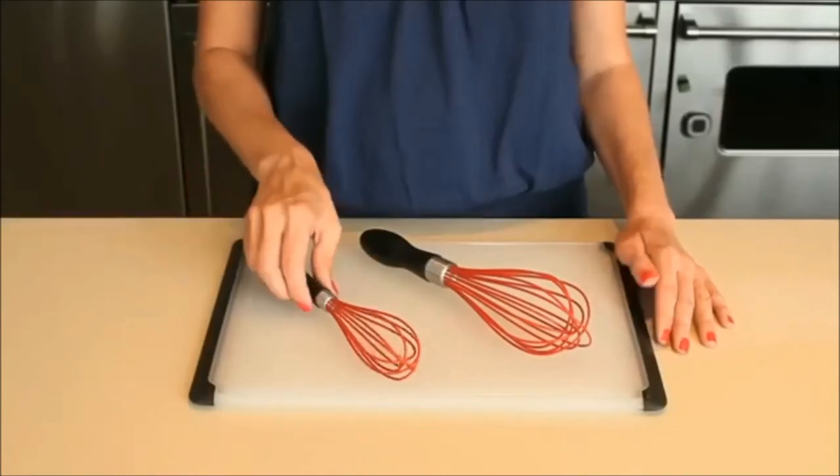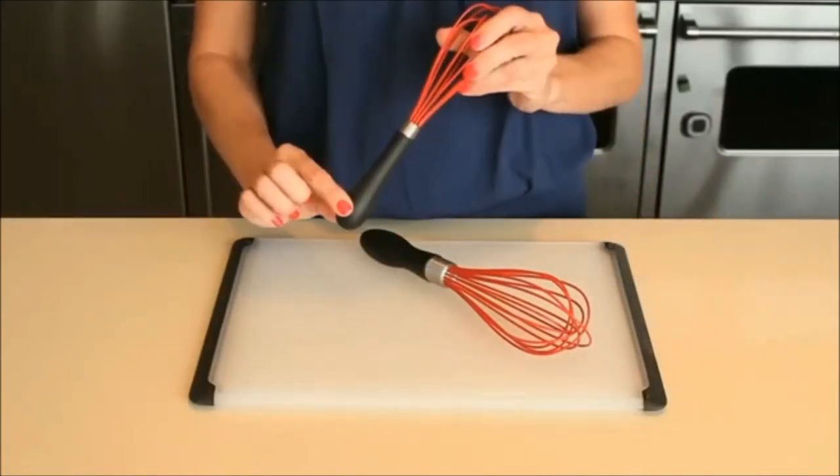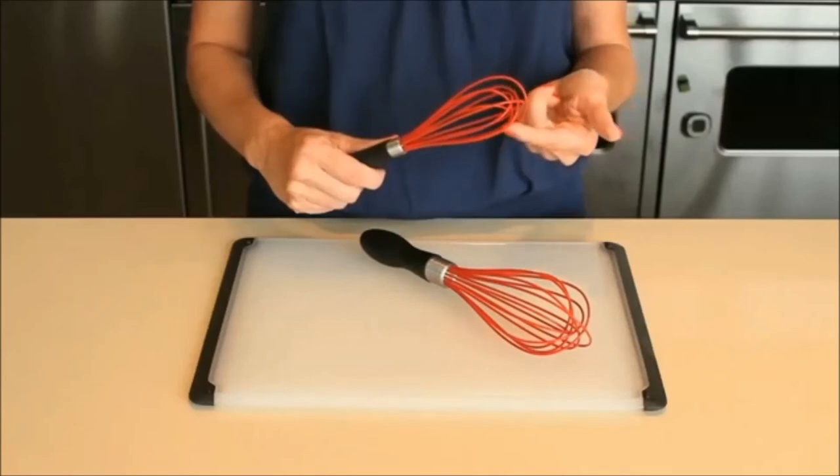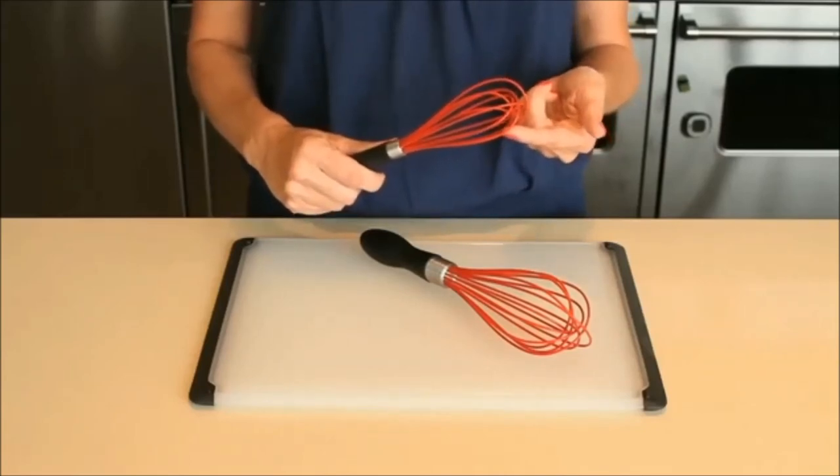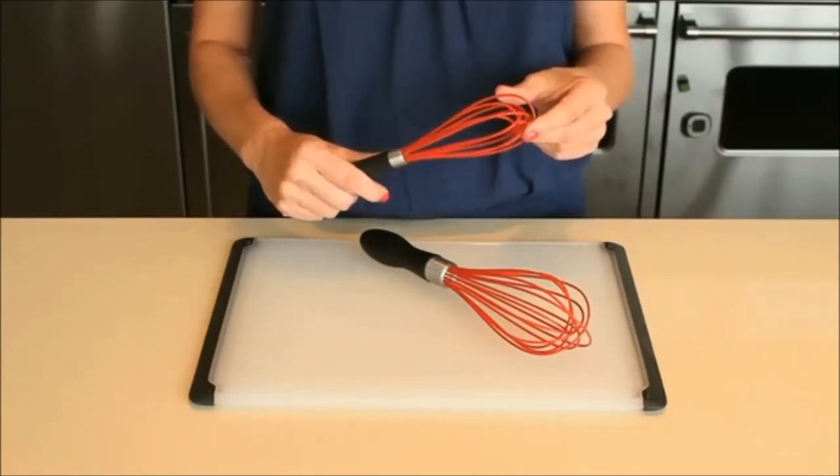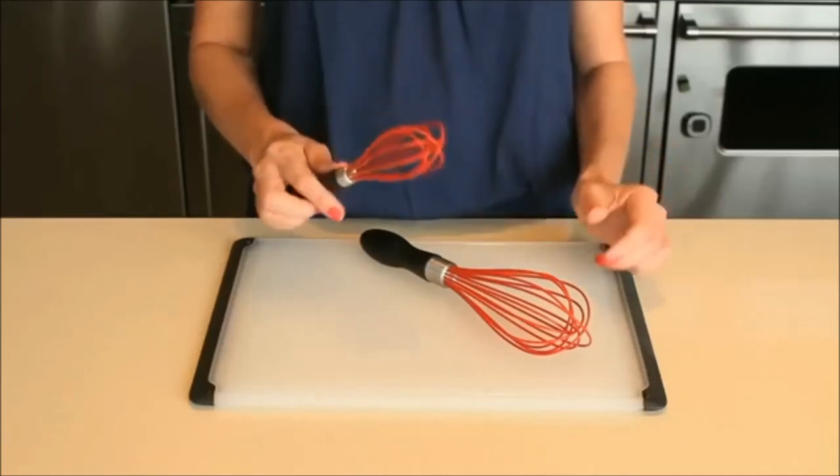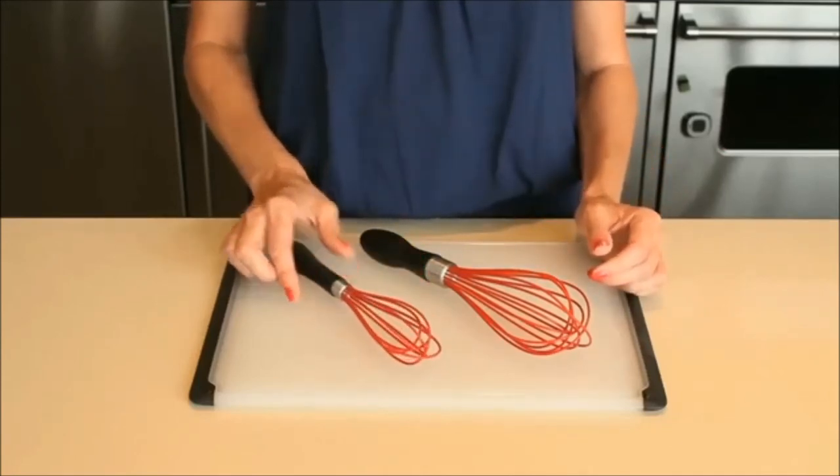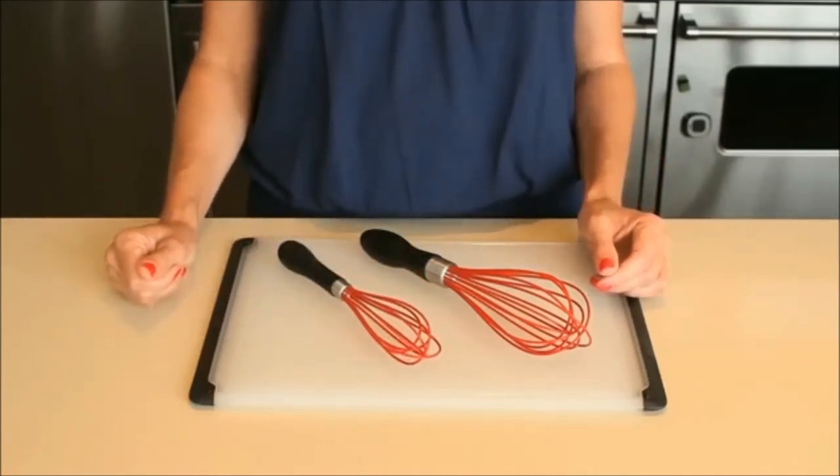Last but not least, best non-stick whisk is OXO Good Grips 11-inch Silicone Balloon Whisk. This silicone-coated whisk is safe to use on non-stick cookware, whereas stainless whisks can scratch the coating off a pan. But non-stick whisks are not as durable as steel ones, because the thin silicone coating can tear easily.